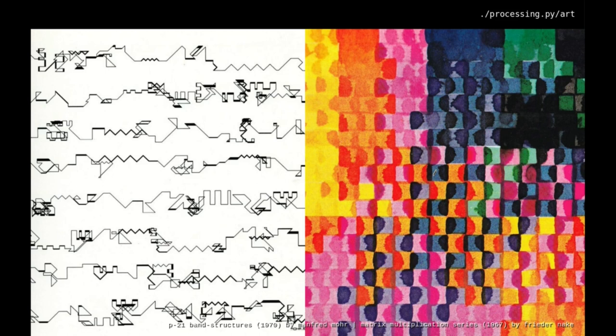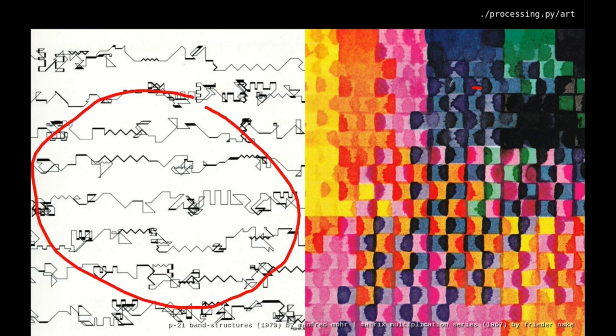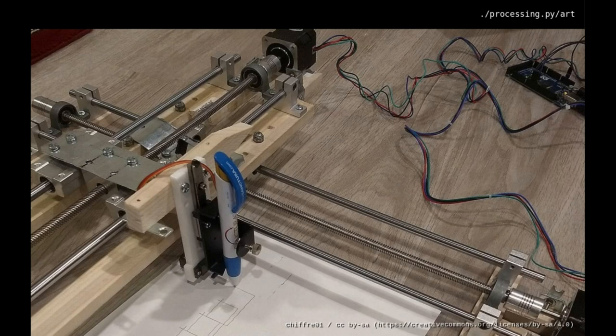Computer art itself goes way back — even before there were computer screens that could present good-looking graphics. On the left we have a Manfred Mohr, and on the right a Frieda Nake. They were basically using plotters to print these things. Early printers were like typewriters with diecast letter forms that stamped ink onto paper. But if you wanted to break away from just printing text, you'd use a plotter, which has an x and y axis and a drawing tip — in this case just a pen — and your computer would send xy coordinates to move the pen and draw different shapes.